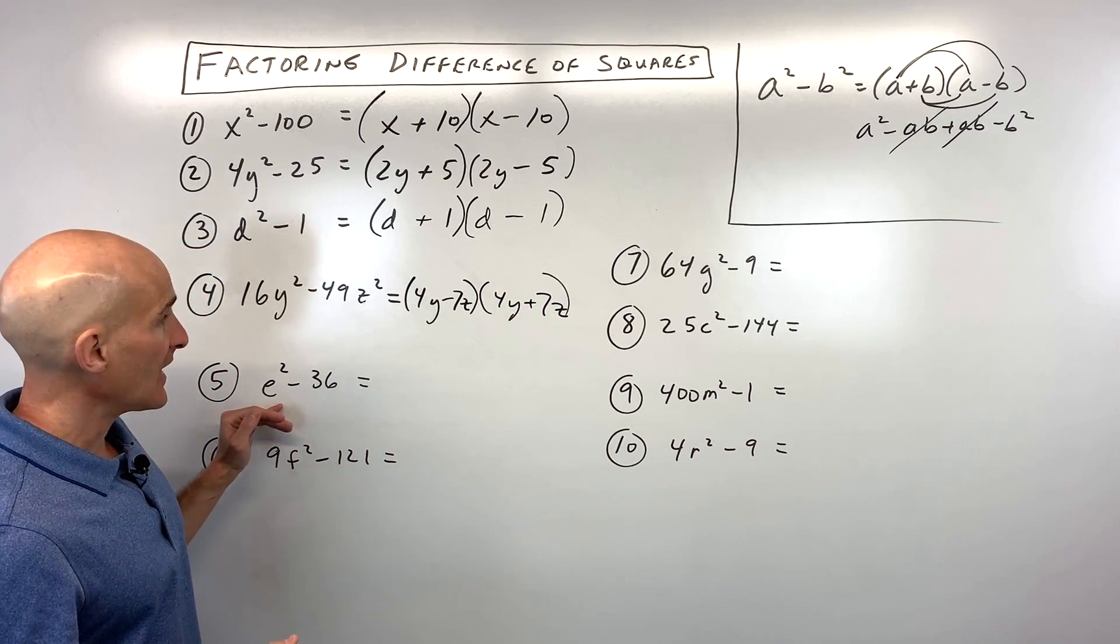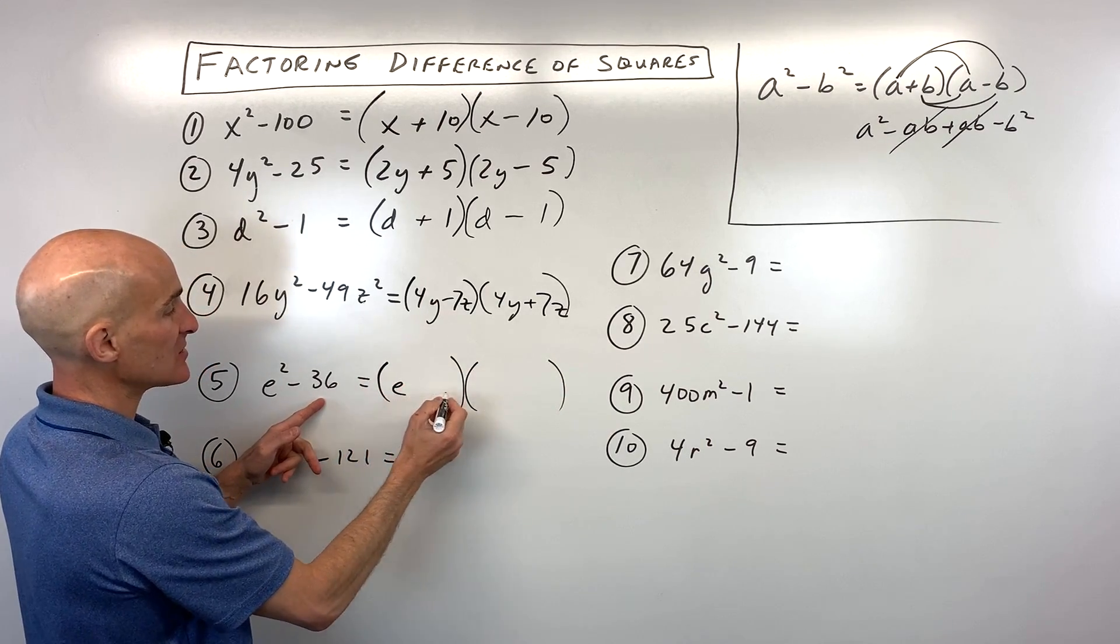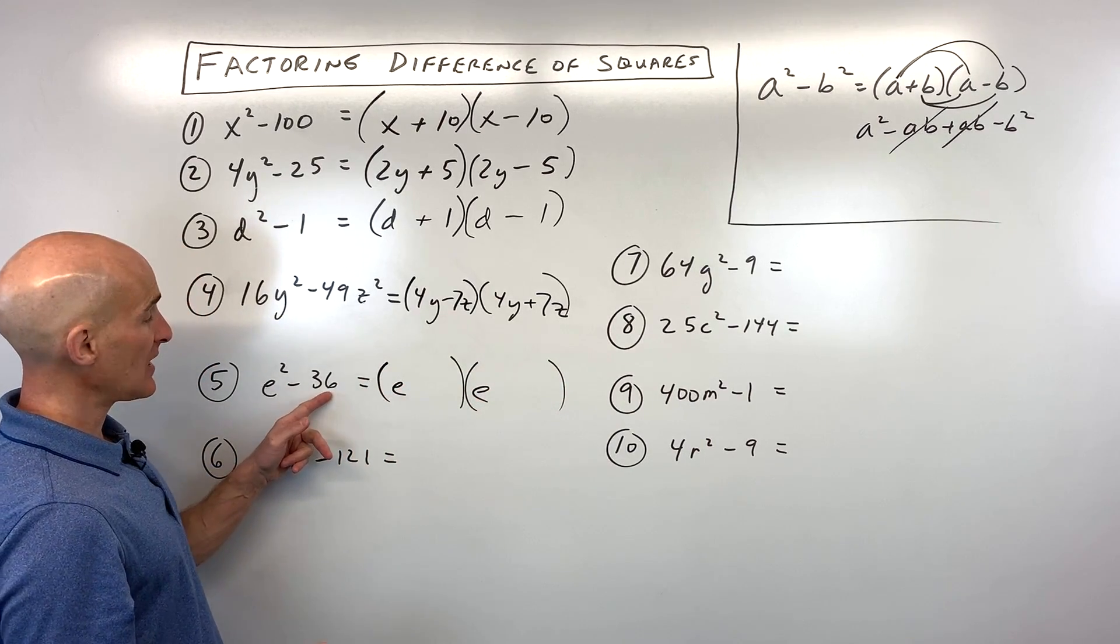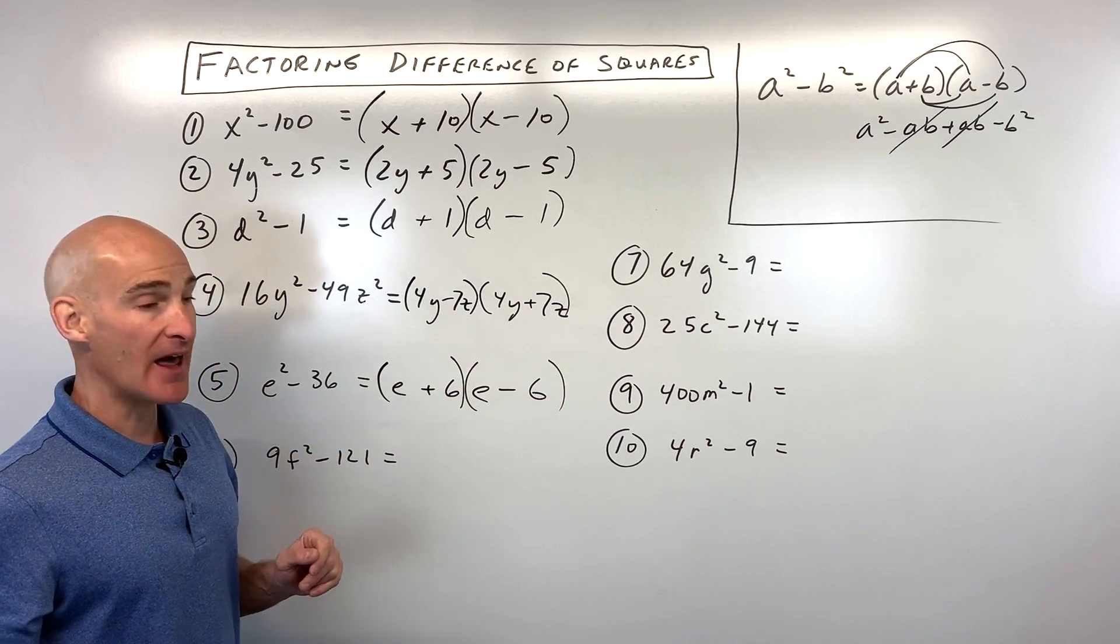Now let's try number five. We've got e squared minus 36. Okay, what times itself is e squared? That's e. What times itself is 36? That's 6. We make one adding, one subtracting, and you got it.